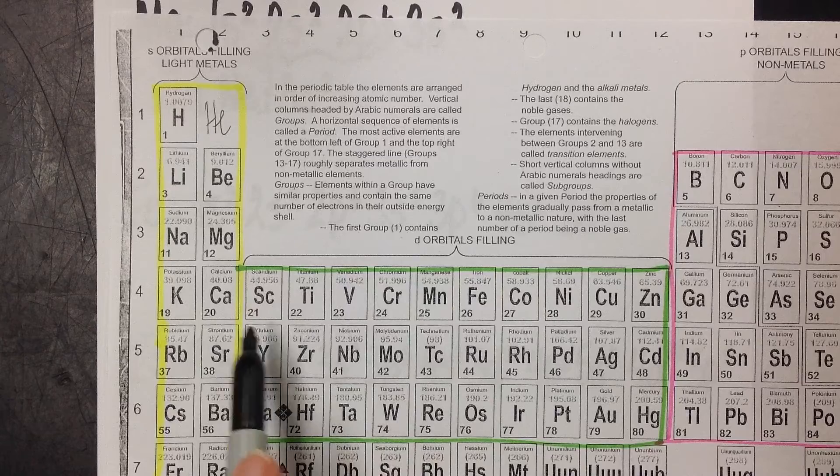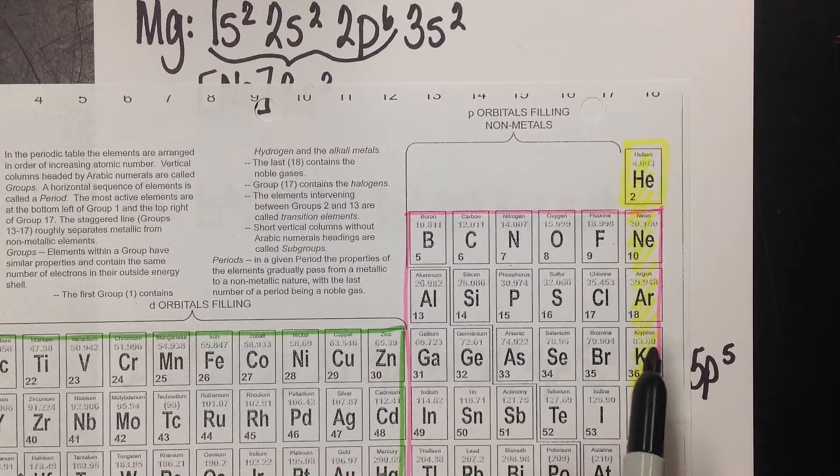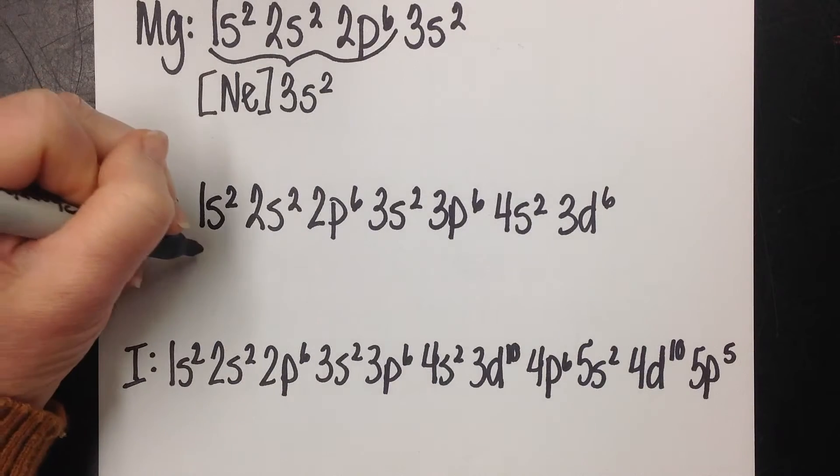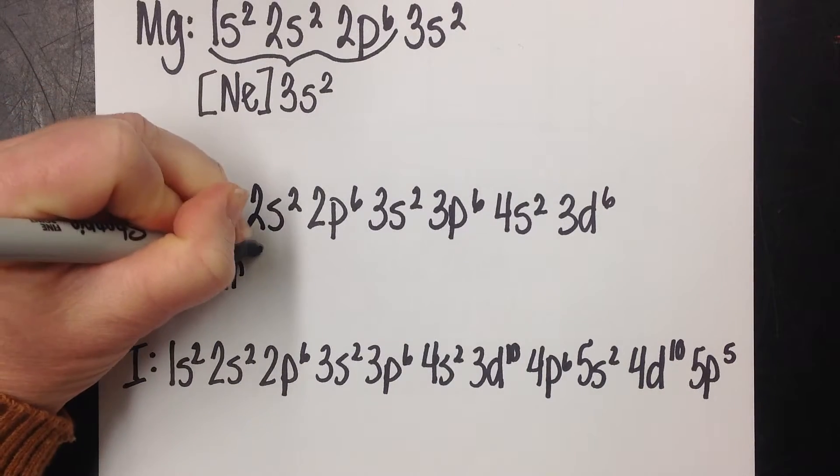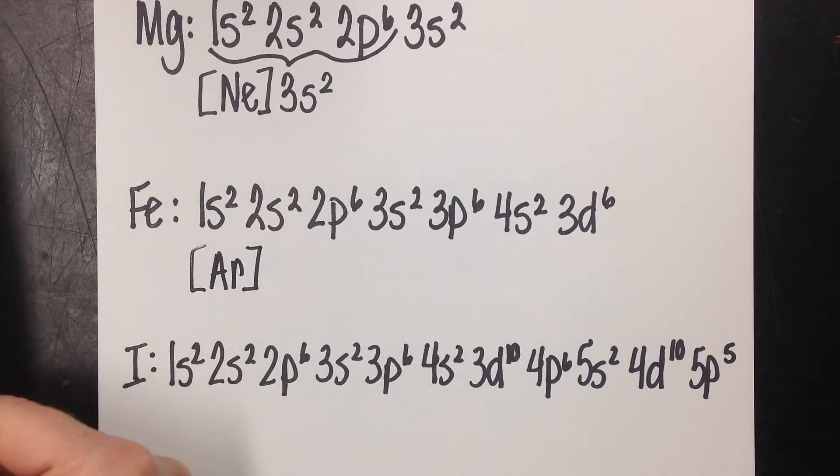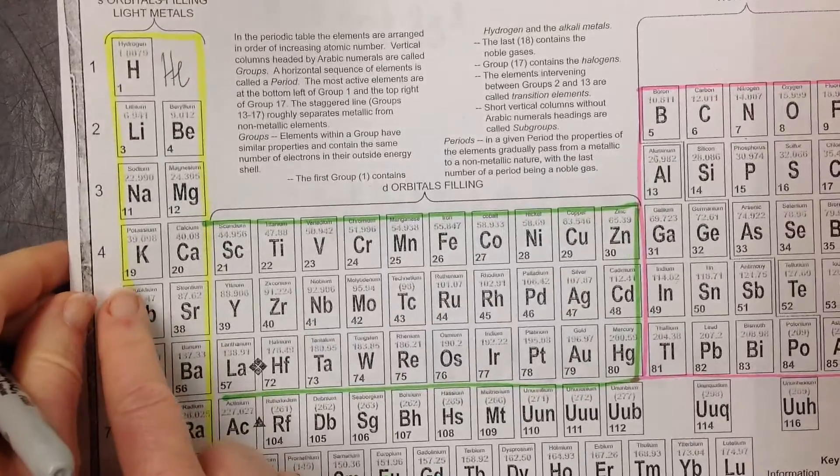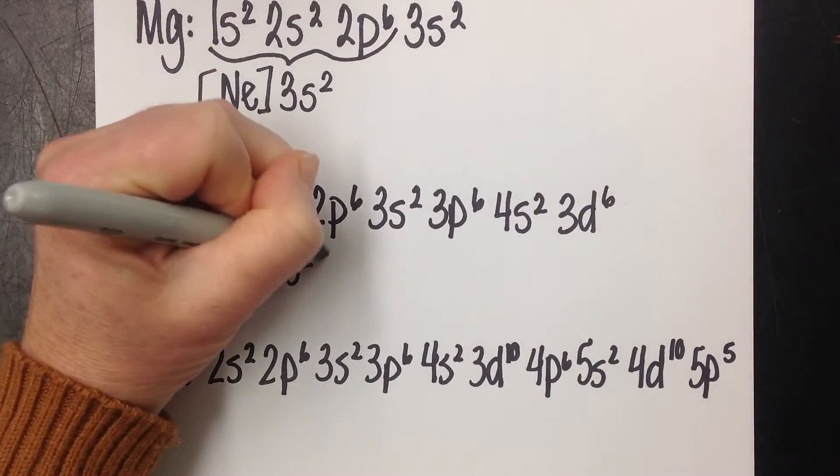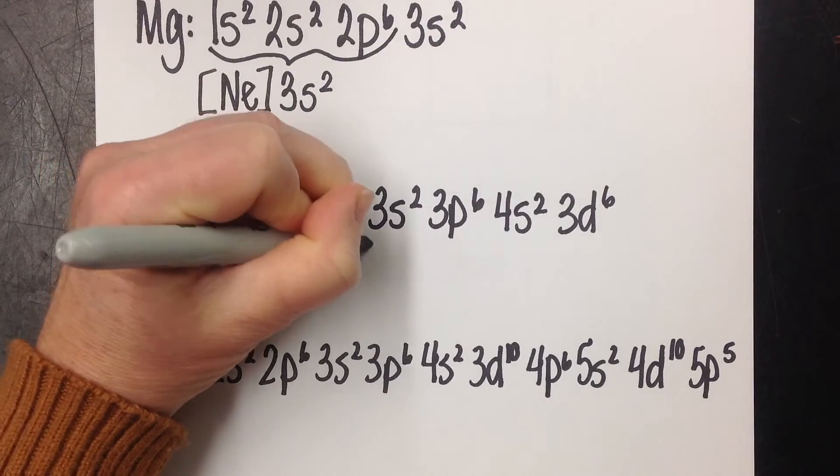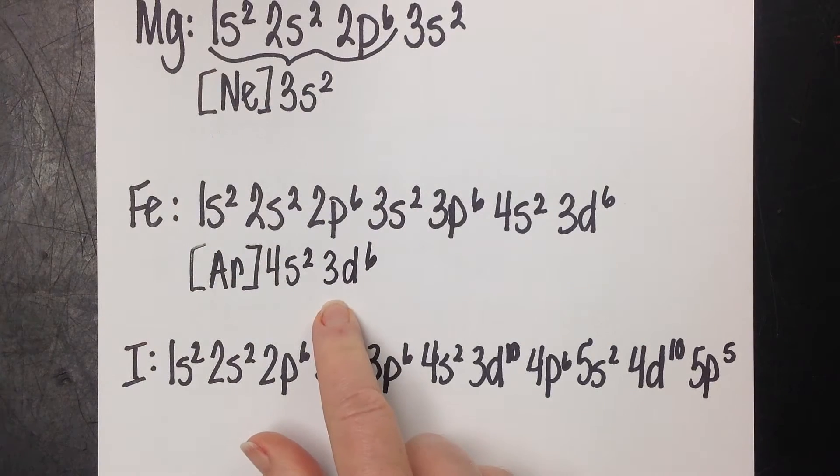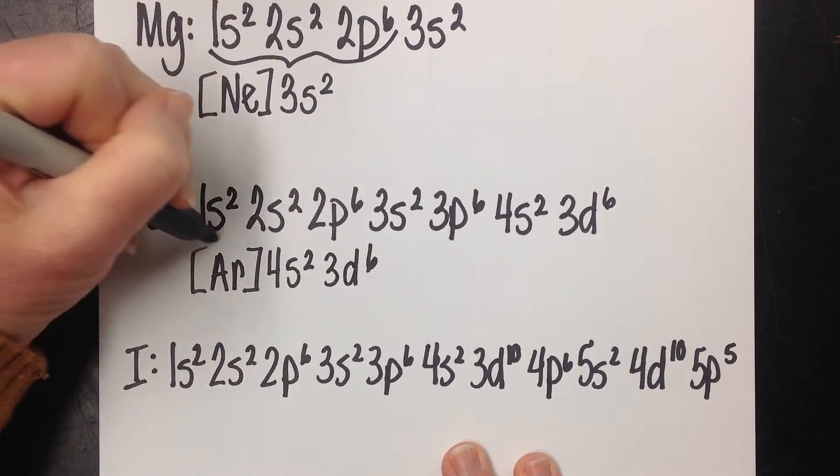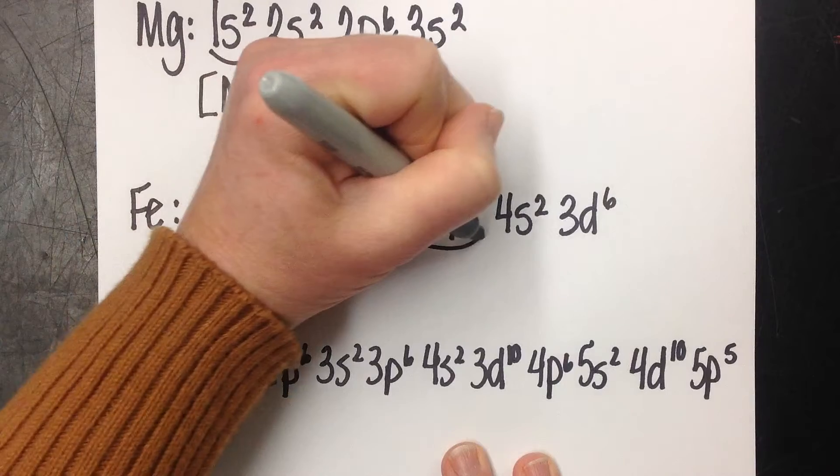Count backwards to the last noble gas that came before iron. It might be tempting to hop forward, but you never go forward. You always go backwards. Start counting back from 26, 25, 24, 23, 22, 21, 20, 19. 18 puts us on argon. Put argon in brackets. Then pick up after argon, which is row 4. We're going to hit 4s2, then 3d6. Remember the d block is always a level behind. That's why I went to 3. We saved some time.